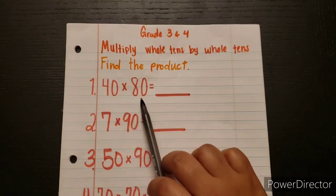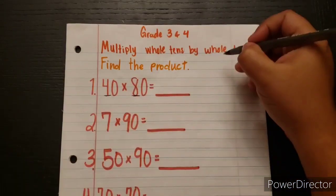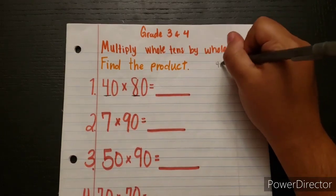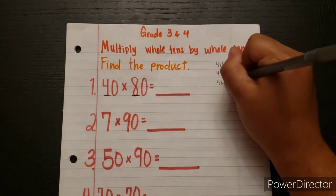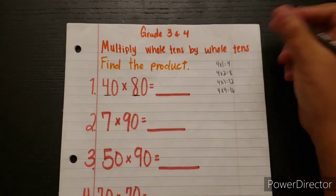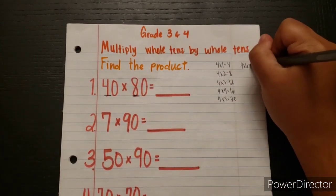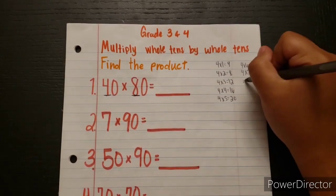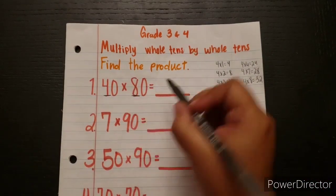We have 40 times 80. So what we need to do is multiply 4 and 8. So right here we can go ahead and write down the multiples of 4. We have 4×1=4, 4×2=8, 4×3=12, 4×4=16, 4×5=20, 4×6=24, 4×7=28, and 4×8=32. So 4 times 8 would be 32.